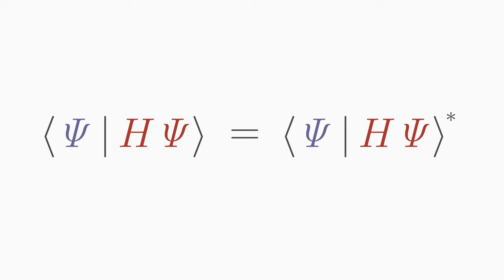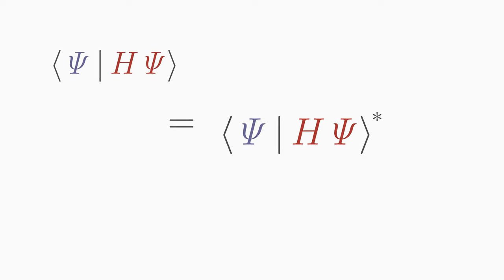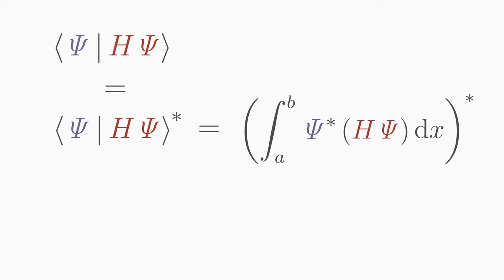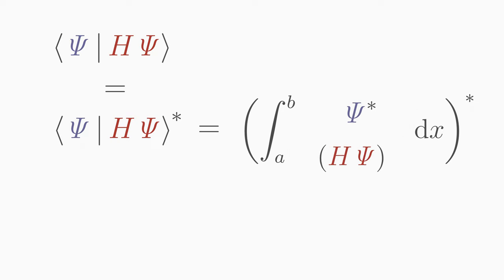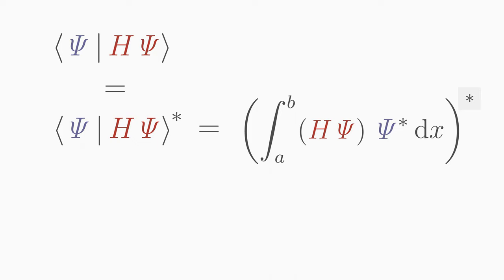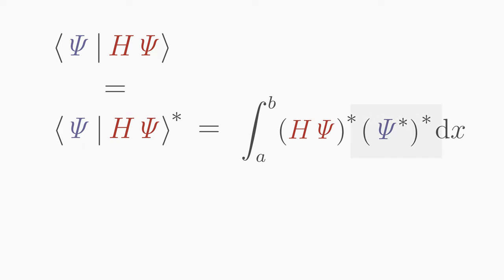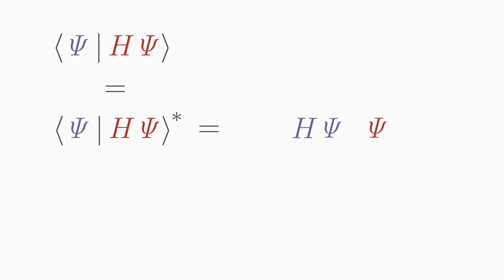Our demand for real numbers has far-reaching consequences for the operator H in its properties. Let's find out what we will get if we manipulate the complex conjugate integral. First, we can swap the two scalar functions H Psi and Psi star. Then we apply the complex conjugation to the individual integrands. Psi twice complex conjugated gives Psi again. Let's also write the result in bra-ket notation.